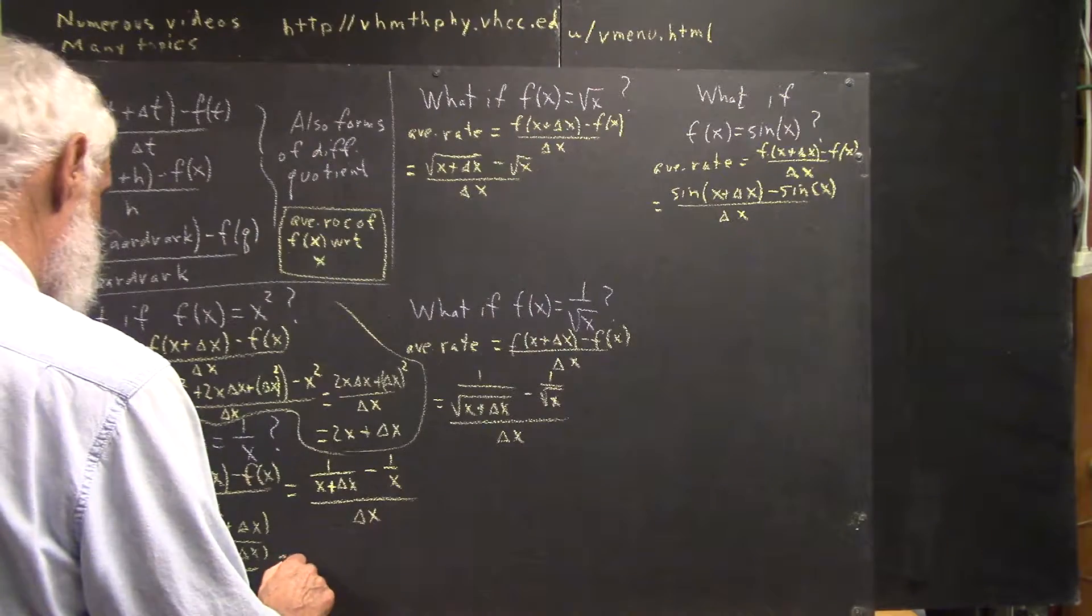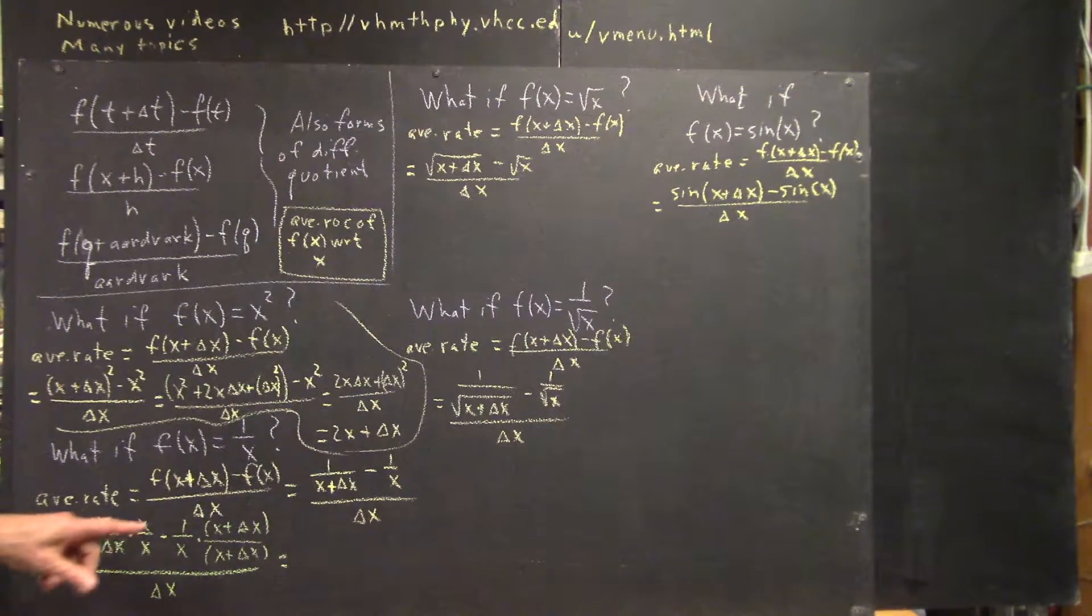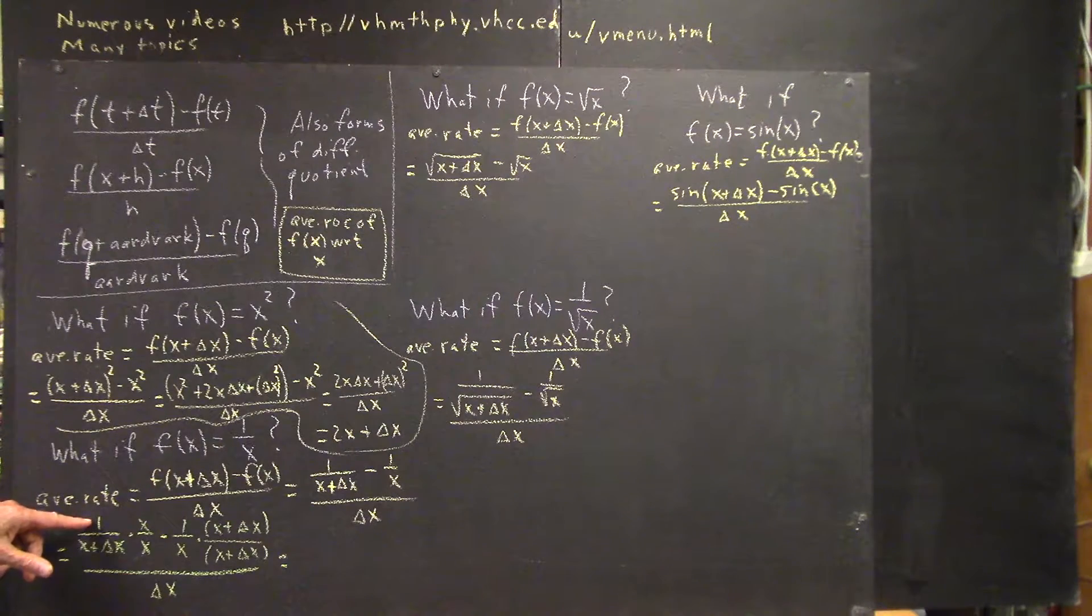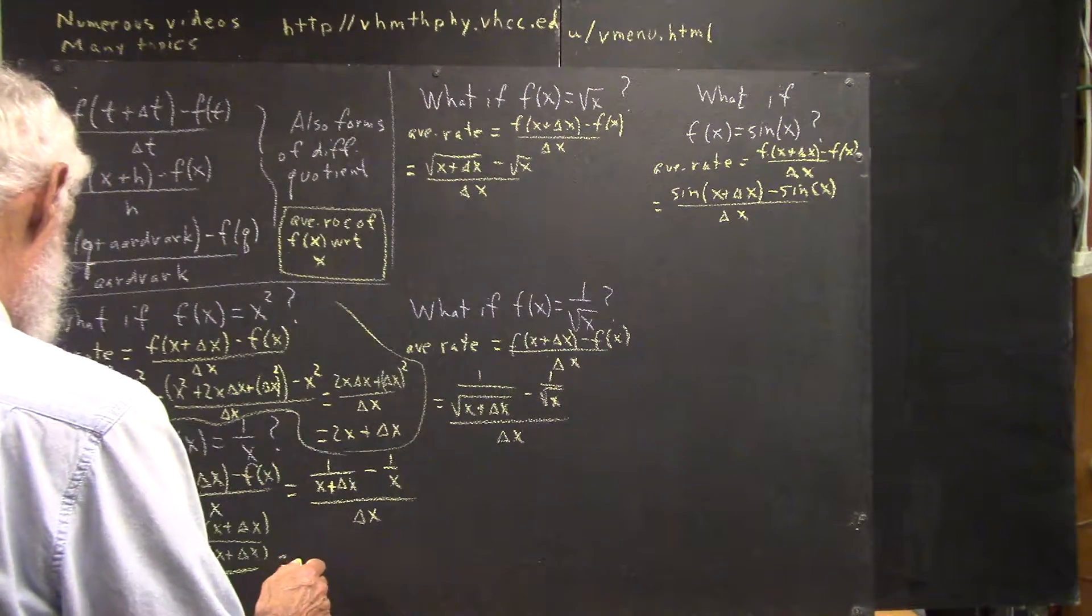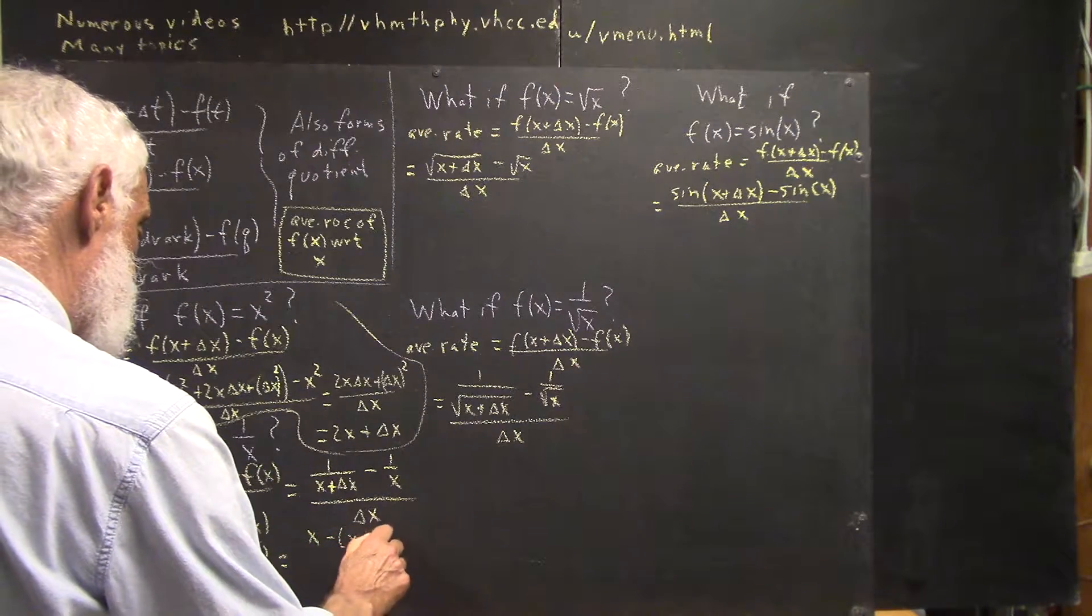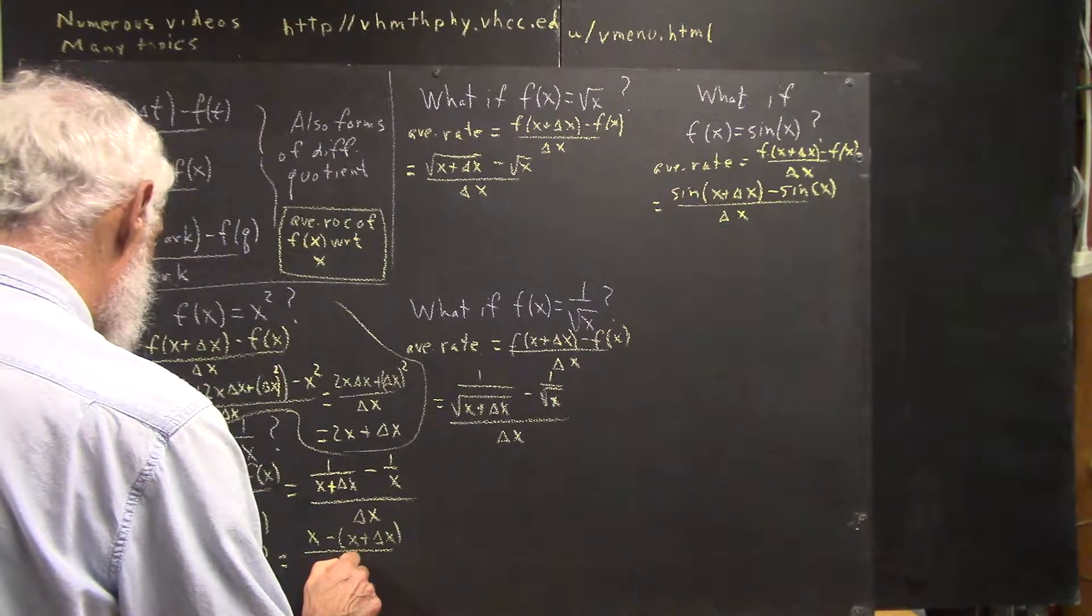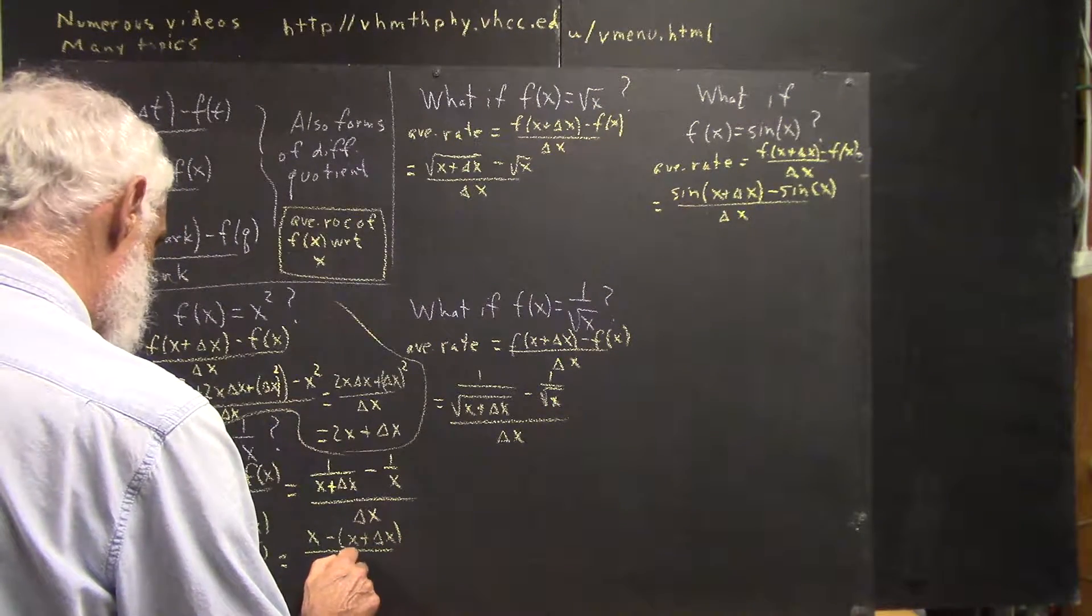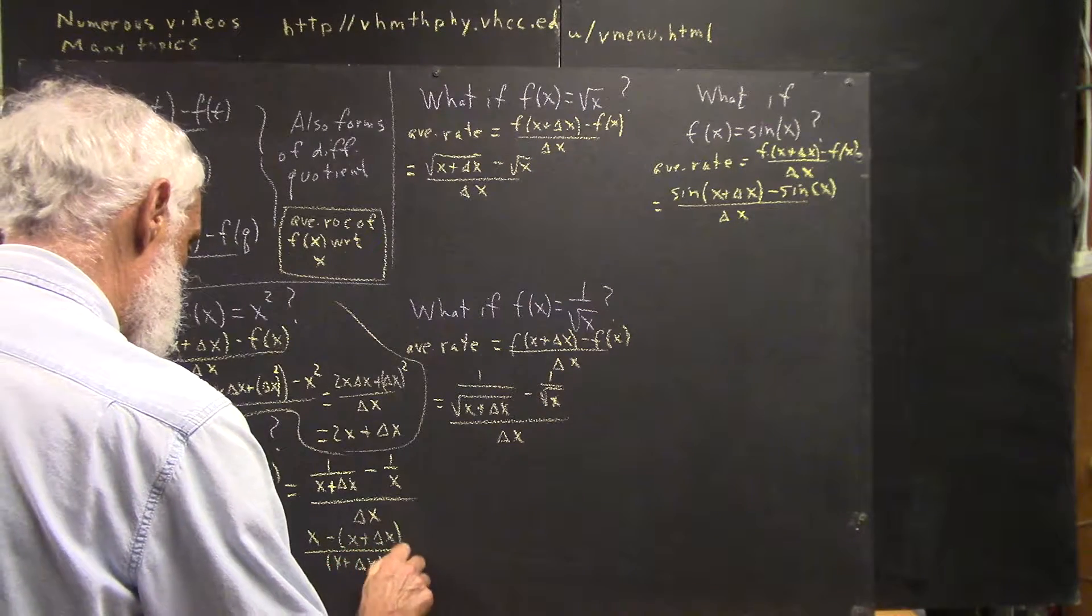And now I can see that I'm going to have an x in the numerator here and an x plus delta x in the numerator here. And in the denominator, I'm going to have x times x plus delta x.